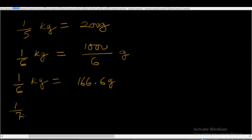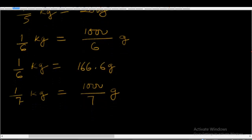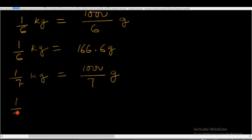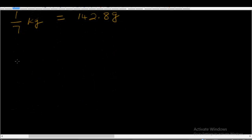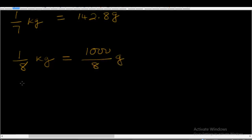When you divide by 7: 1 over 7 kg is equal to 1,000 over 7 grams. 1 over 7 kg is equal to 1,000 divided by 7, which equals 142.8 grams. Now dividing by 8: 1 over 8 kg is equal to 1,000 over 8 grams. If you divide 1,000 by 8, you will get 125 grams.